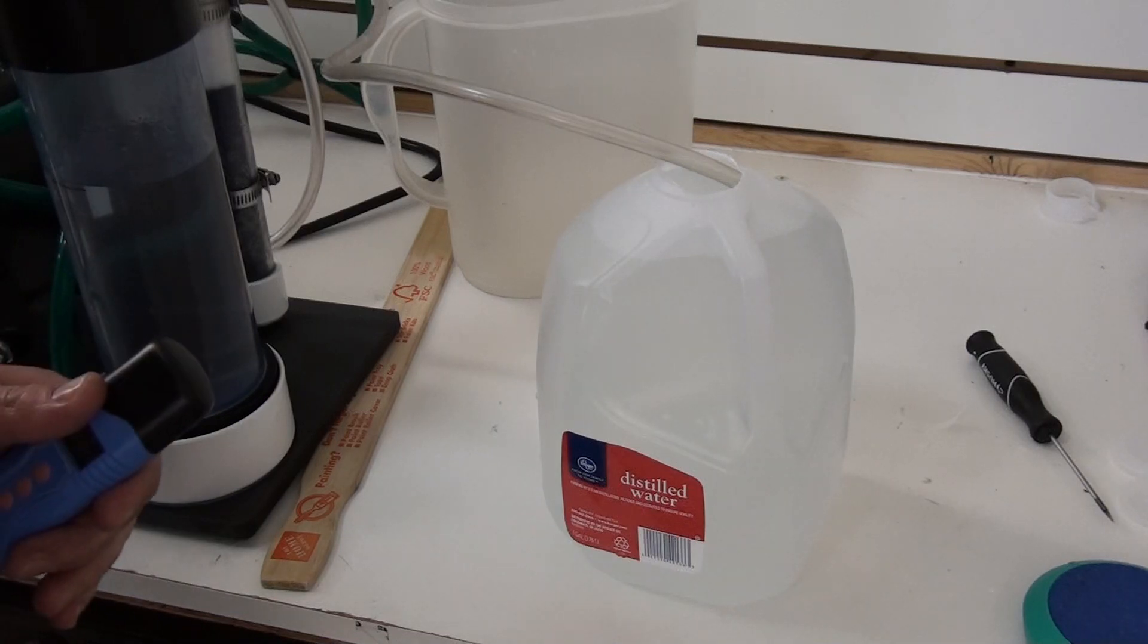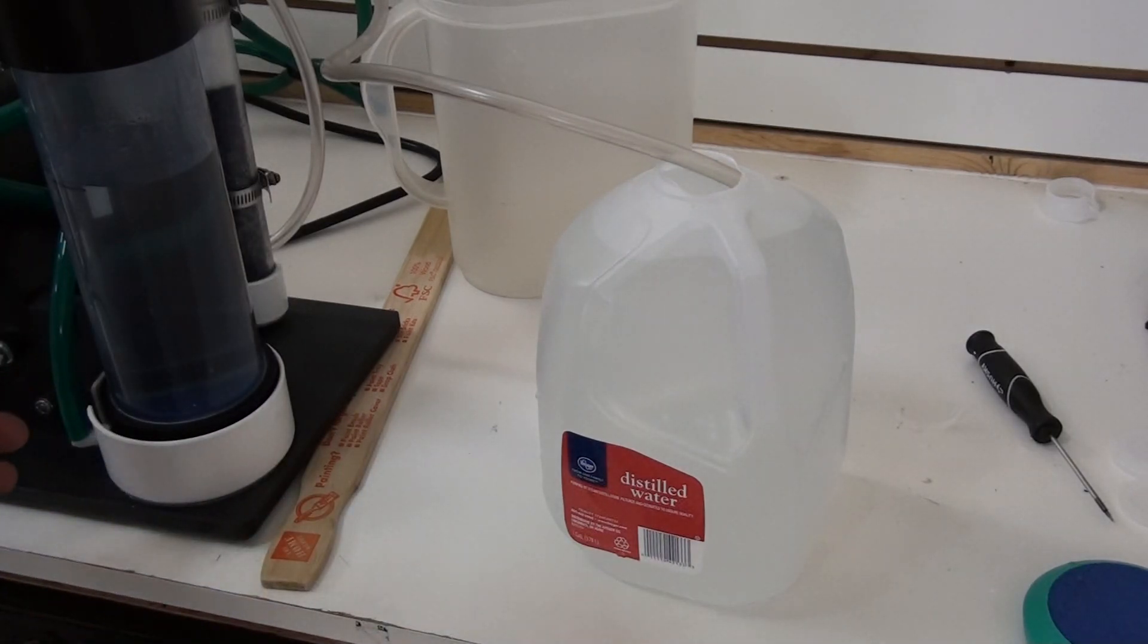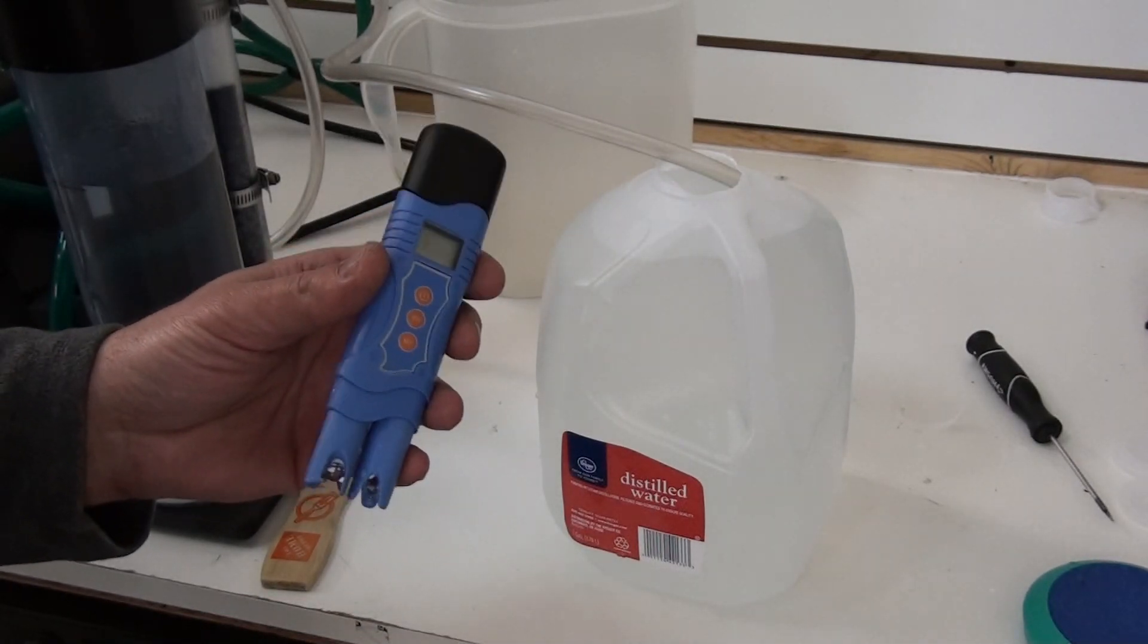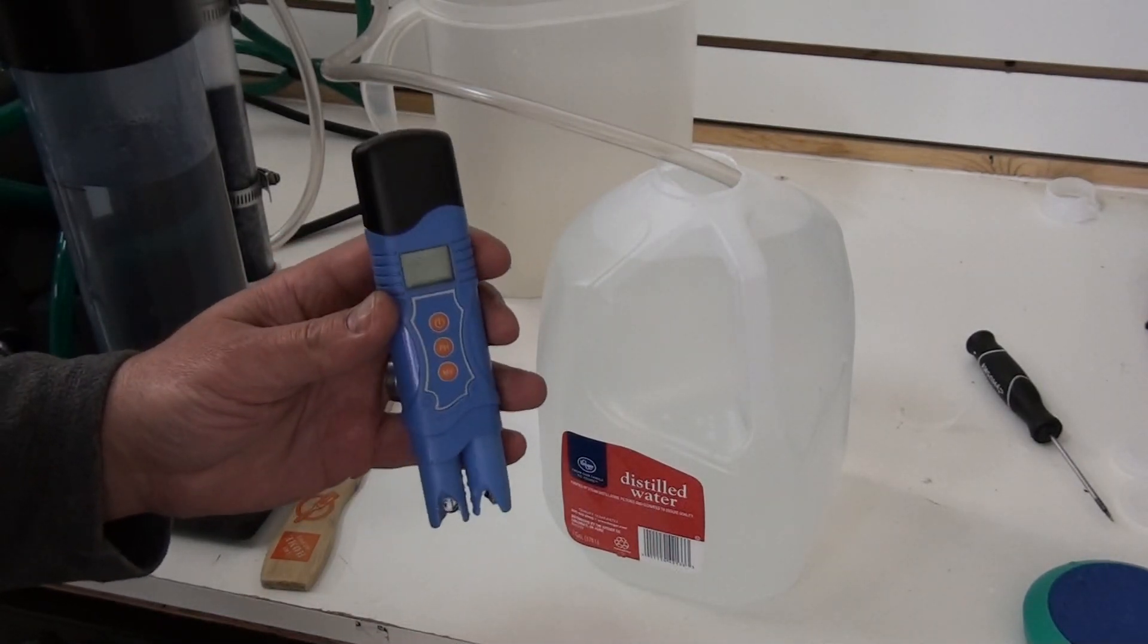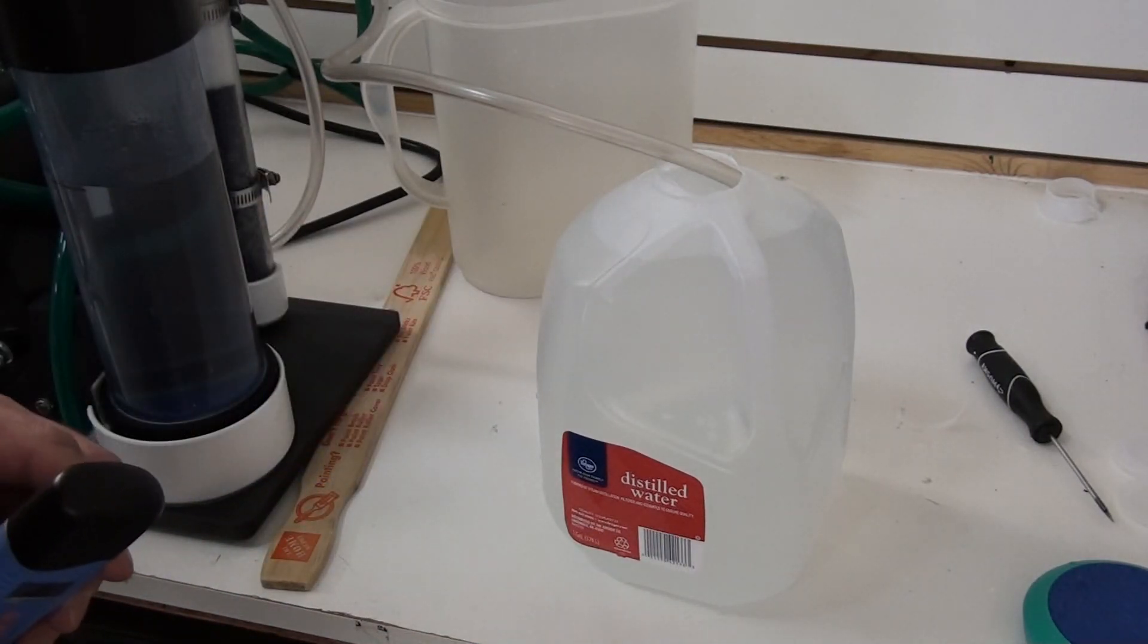I get a lot of questions on how long it takes to charge a gallon of water. So we have a gallon of distilled water here today. We're going to set our machine at 1 liter per minute and we're going to measure the ORP and see how long it takes to get a maximum ORP on this and how long it takes to charge this gallon of water.